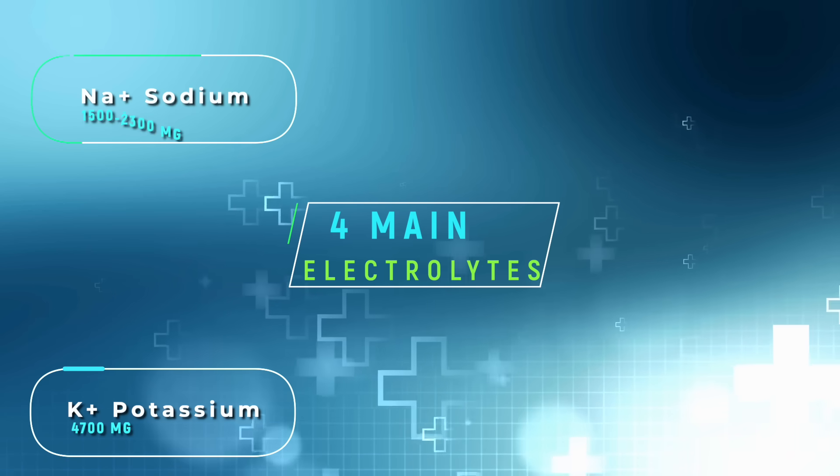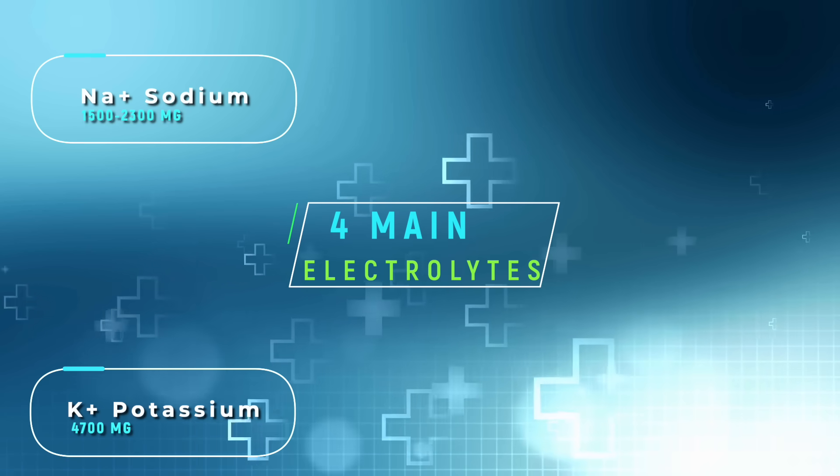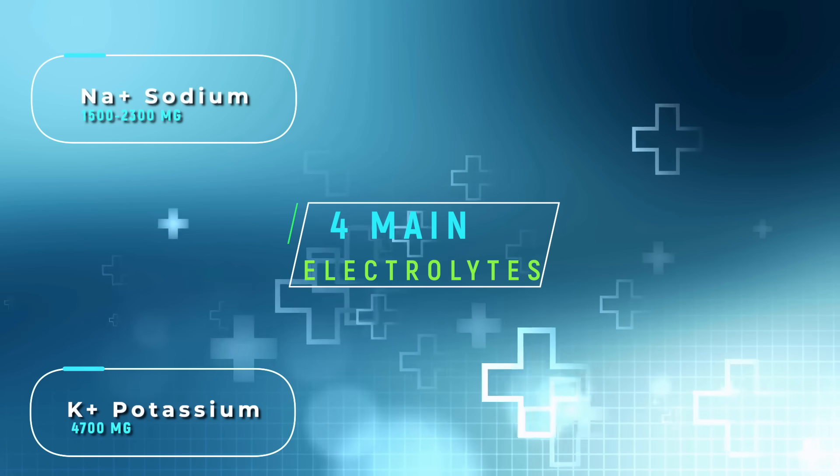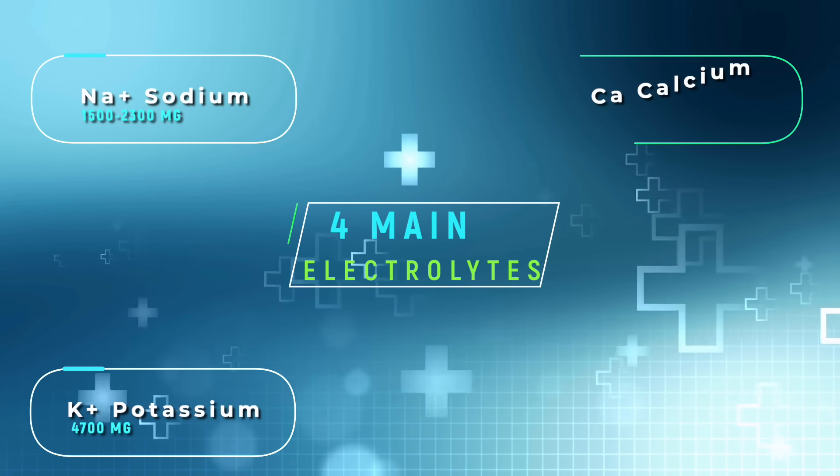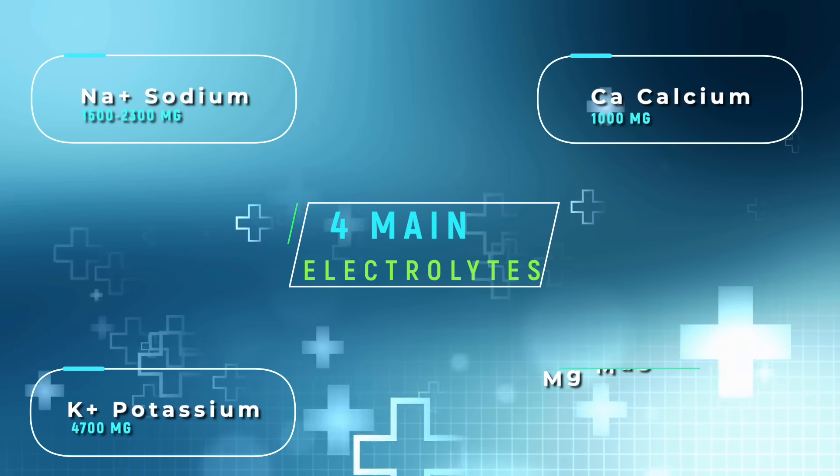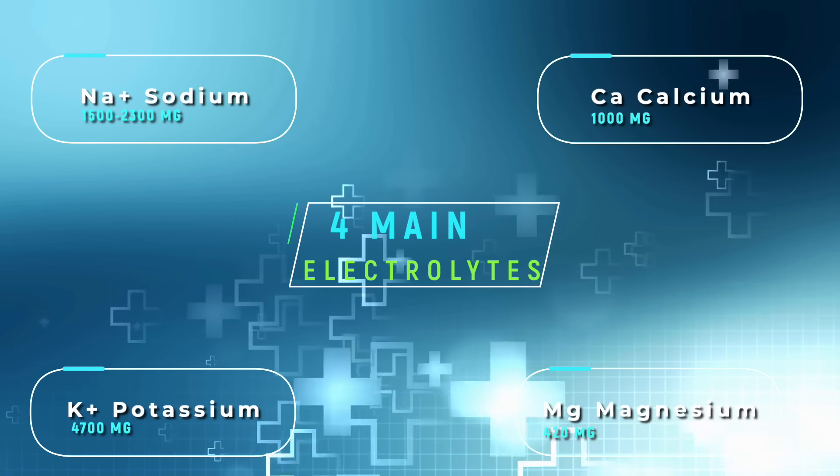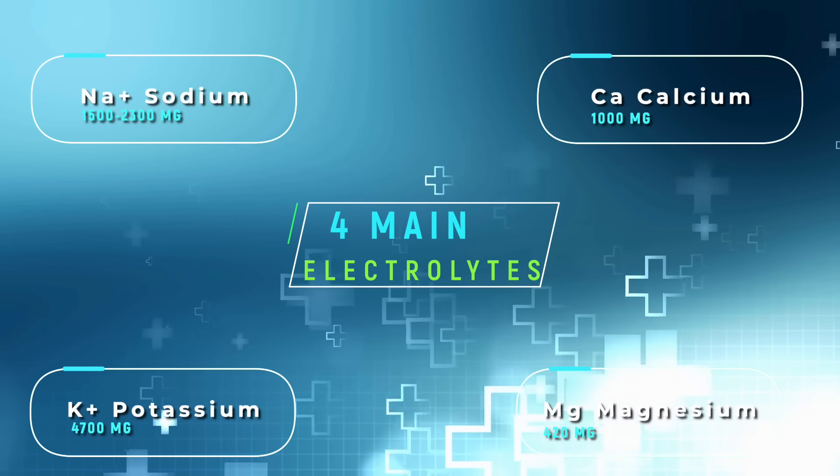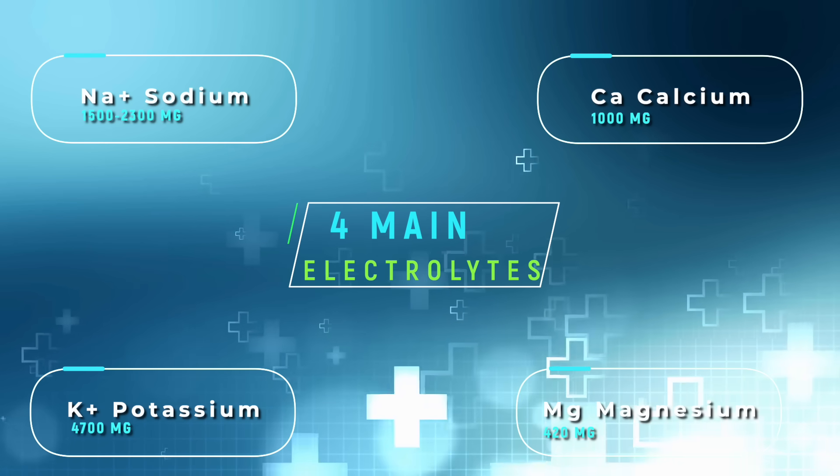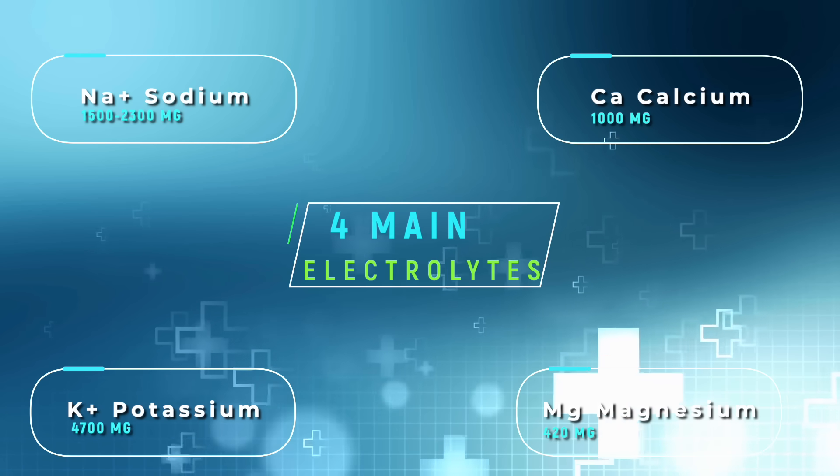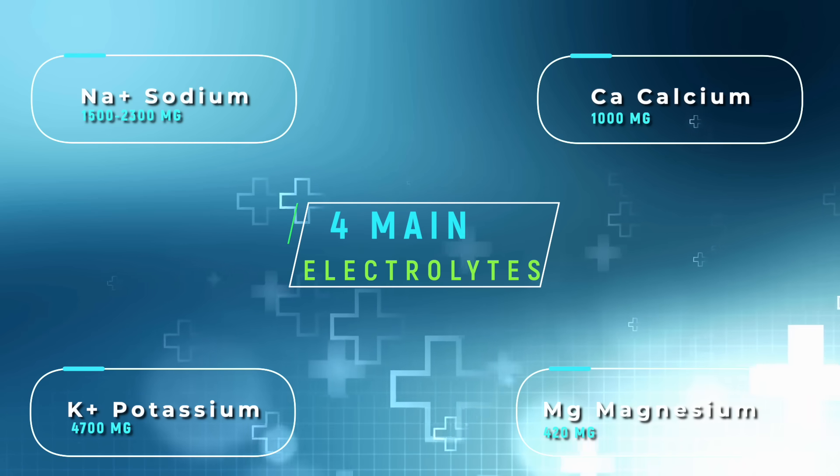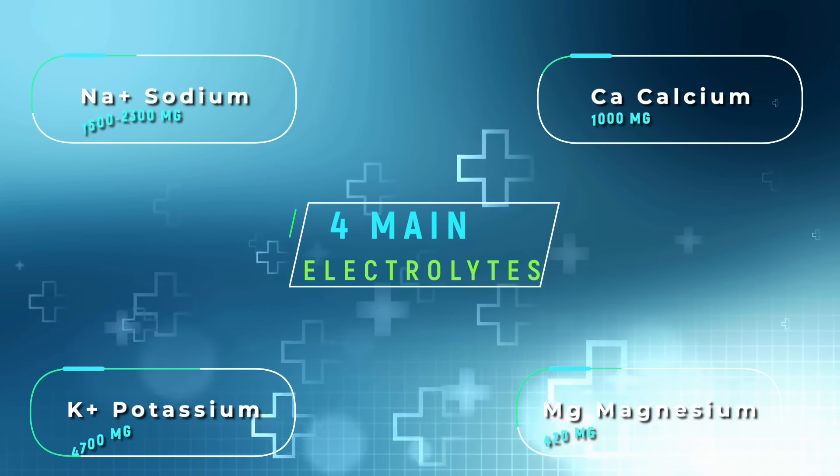We have K+, which is the chemical symbol for potassium. We need 4,700 milligrams. Then we have sodium, Na+, 1,500 to 2,300 milligrams. Then we have calcium, Ca, we need 1,000 milligrams. And magnesium, we only need 420 milligrams. So we can see that we need 10 times as much potassium than we do magnesium, twice as much as sodium, and four times as much as calcium.